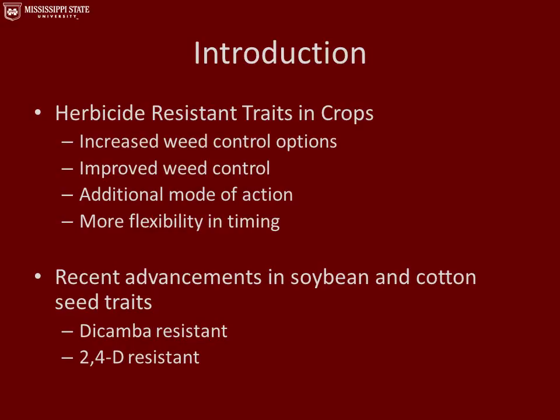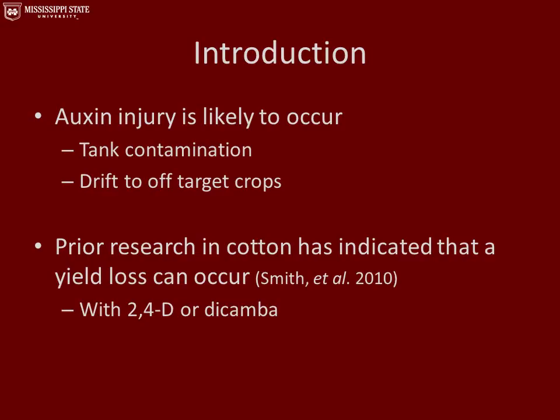With herbicide-resistant traits in cropping systems, we see increased weed control options, overall improved weed control, additional modes of action in the field, and more flexibility in application timing. Some more recent advancements in soybean and cotton seed traits are the dicamba-resistant and 2,4-D-resistant seed traits. With these auxin-resistant cropping systems, we're going to begin to see more large broadcast applications of auxin, and we believe that auxin injury is likely to occur due to tank contamination or drift to off-target crops. Prior research at Mississippi State conducted in cotton has indicated that yield loss can occur with 2,4-D or dicamba.